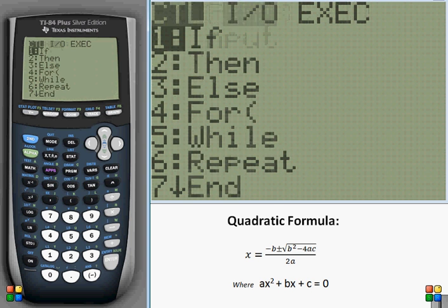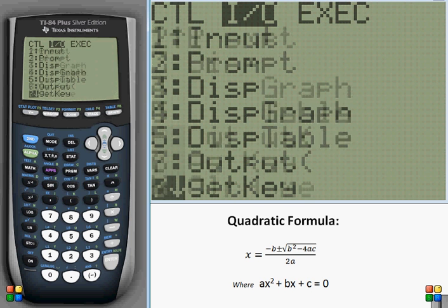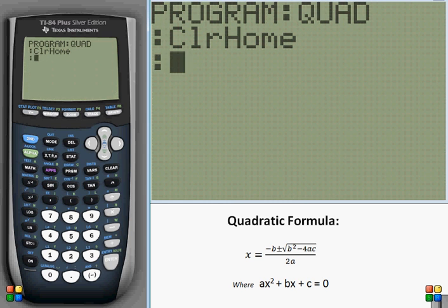First thing, go ahead and clear the home screen, right there. The three variables in the quadratic formula are A, B, and C, so we need to prompt for those.